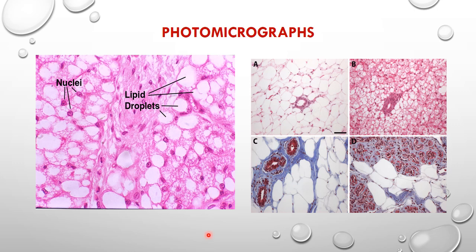These photomicrographs show both white and brown adipose tissue. In one slide both types of adipocytes — multilocular and unilocular — are present together. Comparing slides of white adipose tissue and brown or multilocular adipose tissue, you can see and enumerate the differences between the two. A slide of the mammary gland shows alveoli also filled with fat droplets; these are unilocular adipocytes or white adipose tissue in the mammary gland.